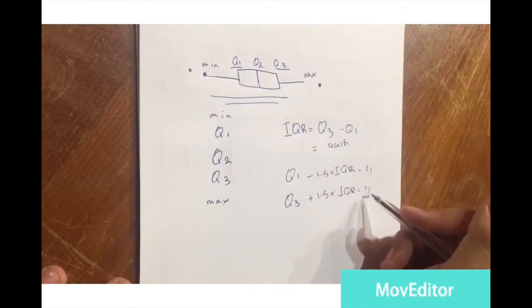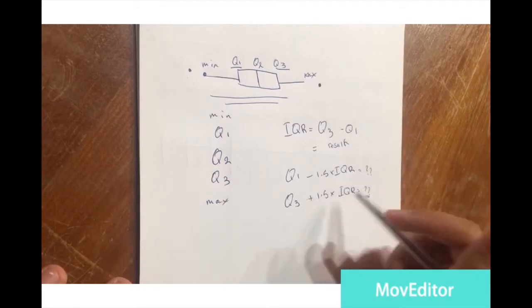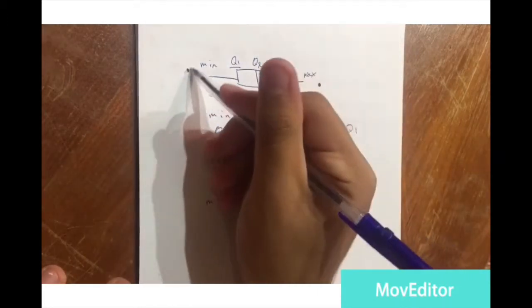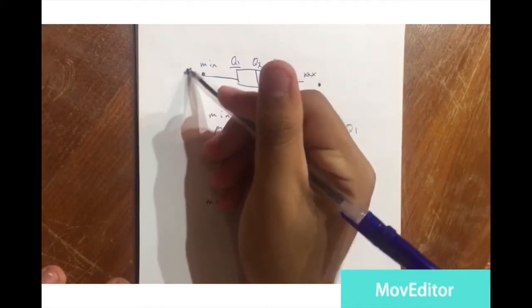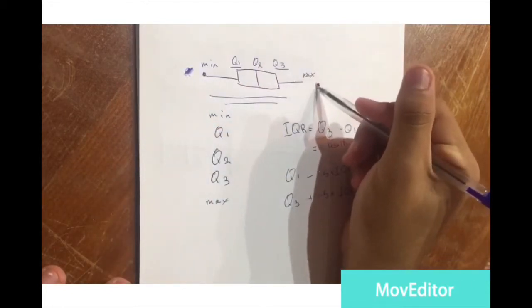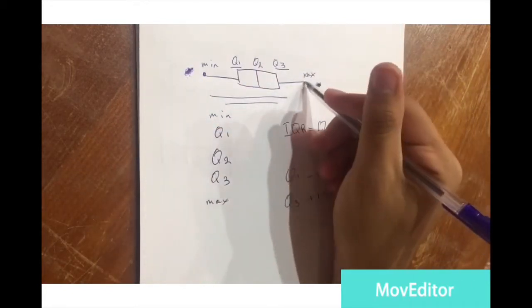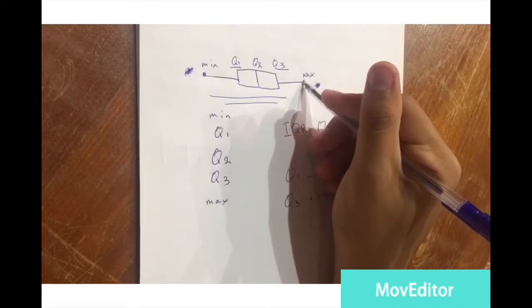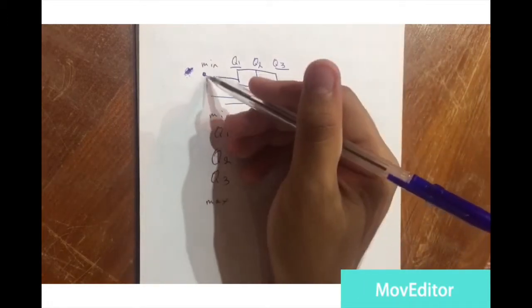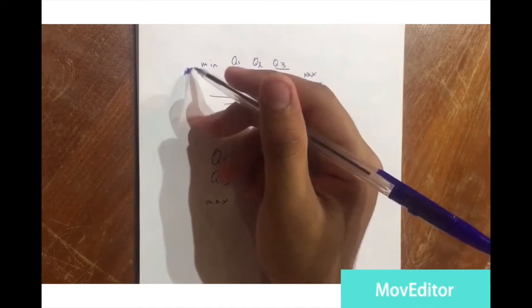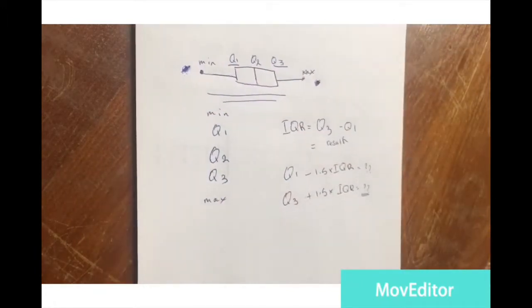It's important to note that an outlier doesn't have to be the number directly before the minimum or after the maximum — even the minimum or maximum itself can be an outlier, or any other number in the data set.